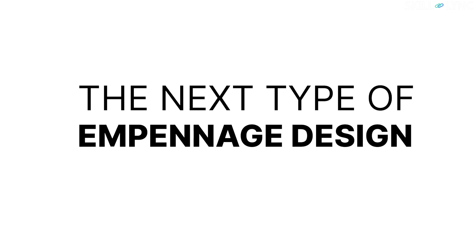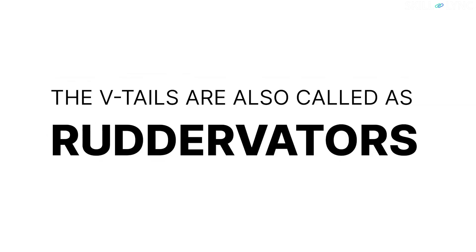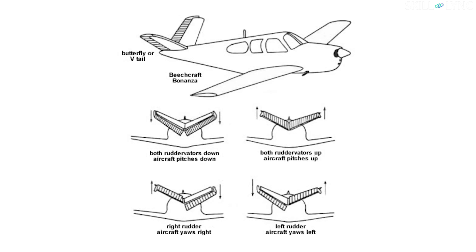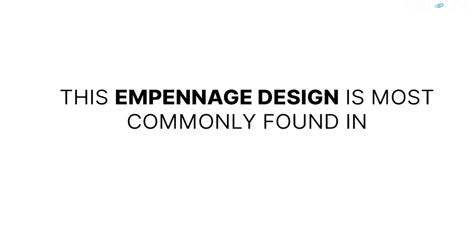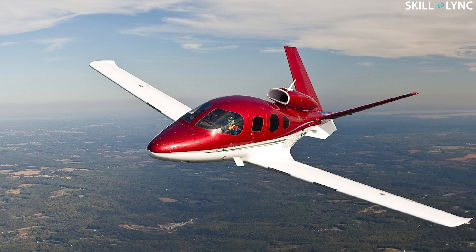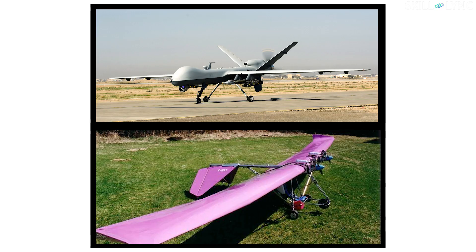The next type of empennage design is the V-tail. V-tails are also called ruddervators as they perform the work of both the elevators and the rudders. By moving the control surfaces as shown in the picture, the required yaw or pitch action is achieved. This empennage design is most commonly found in ultralight aircraft, drones, and fuselage-mounted planes. They are used in UAVs and ultralights to reduce the total weight of the aircraft by reducing the number of components in them.